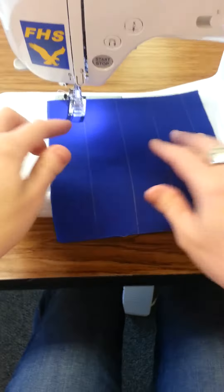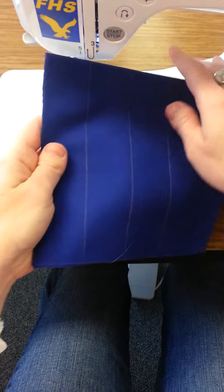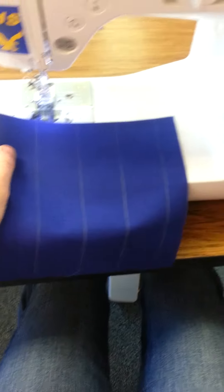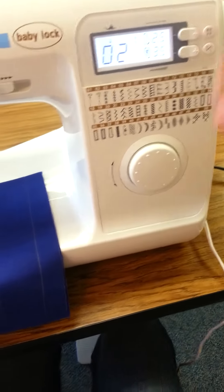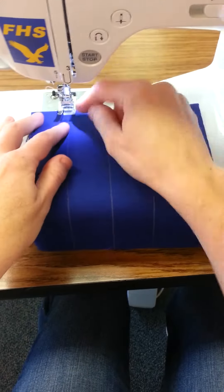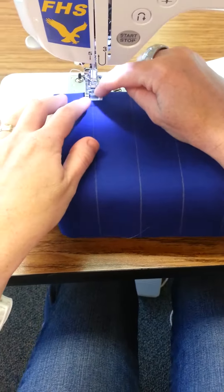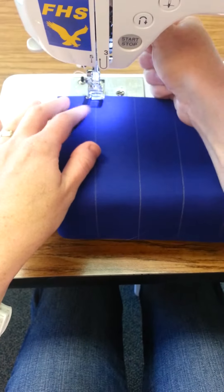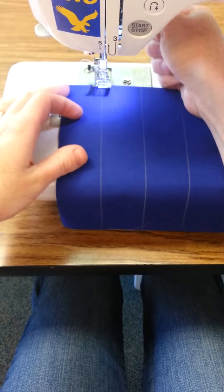All right, our first line on our stitch sampler we're going to do is that basic straight stitch. So our preset is on number two. We're going to go ahead and line up our presser foot. Remember there's a little line on the presser foot that is right in the middle. We're going to put our line on our fabric matched up with the line on the presser foot.